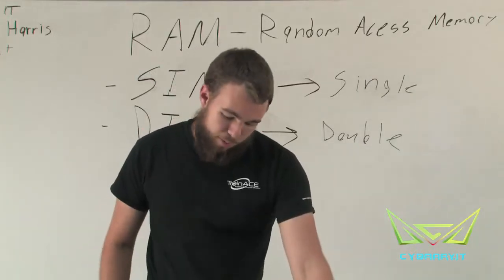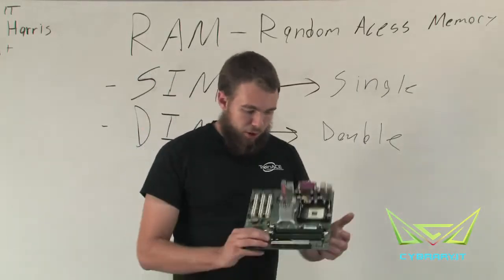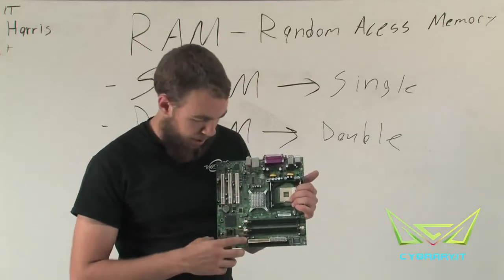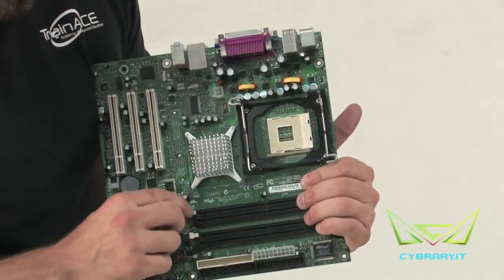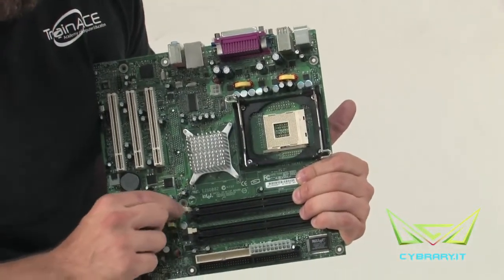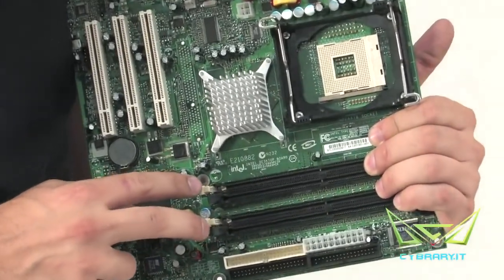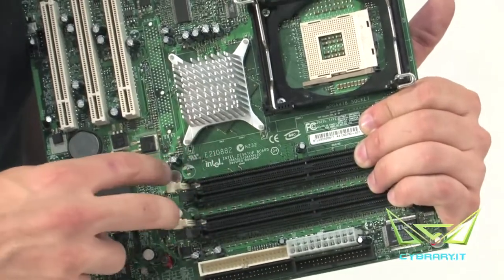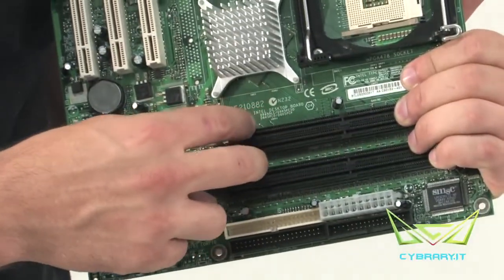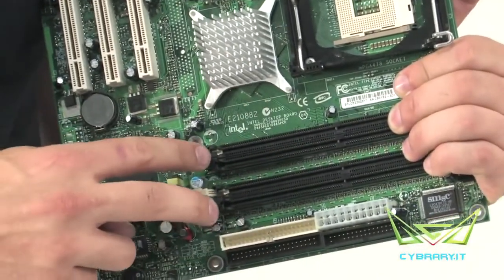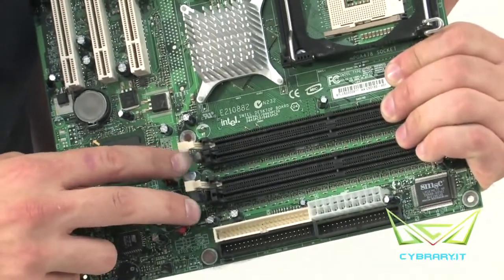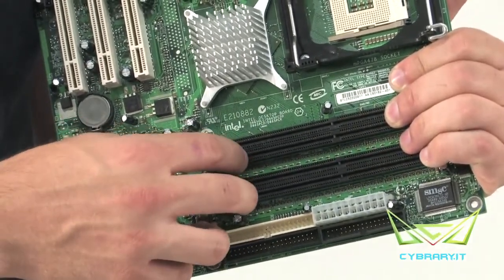When selecting memory for your motherboard, you'll notice that your computer memory comes in banks. Fortunately for us, a lot of times the banks are color coded. On this particular motherboard, you'll notice that we have latches that are white and latches that are black. The two white latches are considered one memory bank, and the two black latches are considered another memory bank.